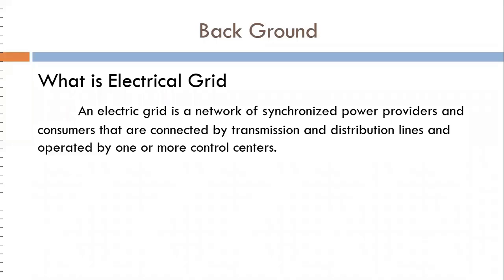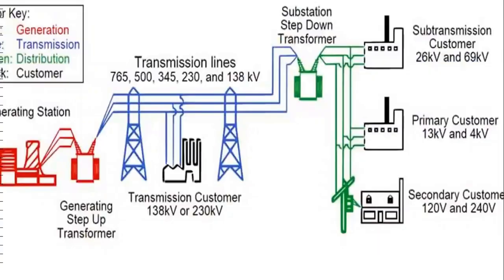First, let us understand what is the meaning of electrical grid. The electrical grid is a network of synchronized power providers and consumers, distribution lines, operated by one or more control centers. We have generation stations, transmission lines, substations, step-down transformers, and connected across different types of loads. The generating station transports its energy through either EHV AC lines or HVDC lines.